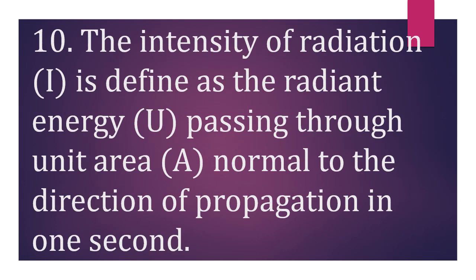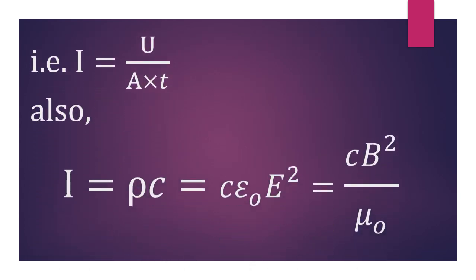Tenth: the intensity of radiation I is defined as the radiant energy u passing through unit area normal to the direction of propagation in one second. That is, intensity I = u/(A·t). Also, the formula for intensity is I = ρc = ε₀E²c or B²c/μ₀.